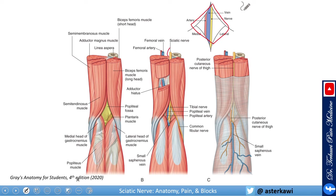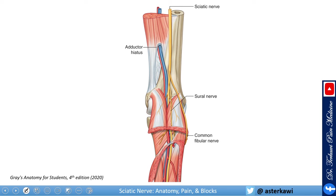Just before the popliteal fossa, you see the nerve between the semitendinosus and semimembranosus medially and the biceps femoris laterally. At this level you can also see the posterior opening of the adductor hiatus, where the femoral artery and vein pass to the posterior compartment of the thigh. The nerve travels underneath these muscles, and here you have the fascia lata continuing as the crural fascia.